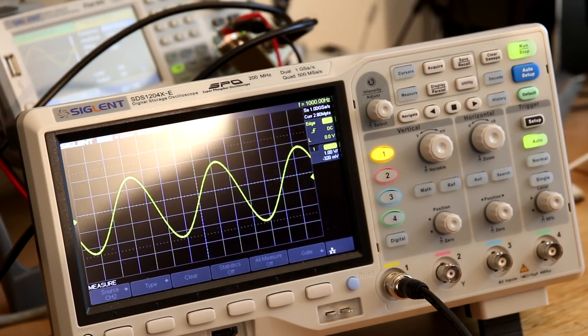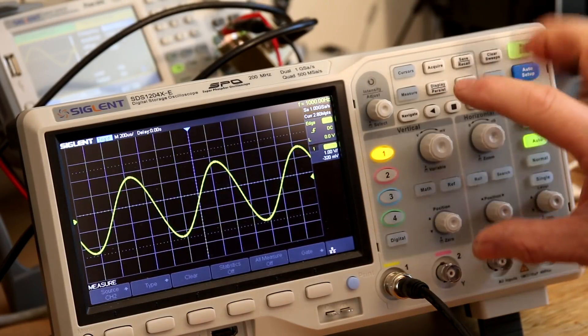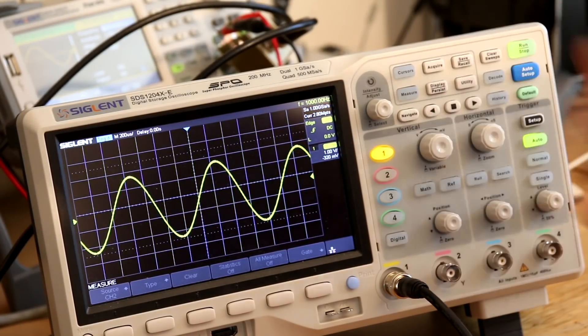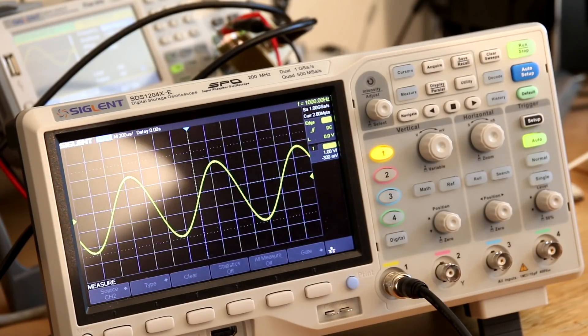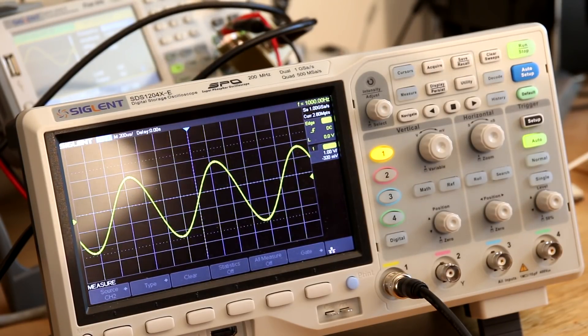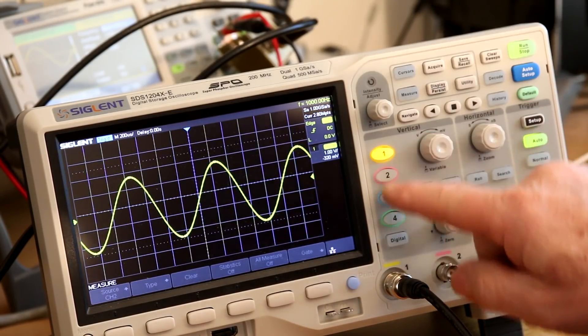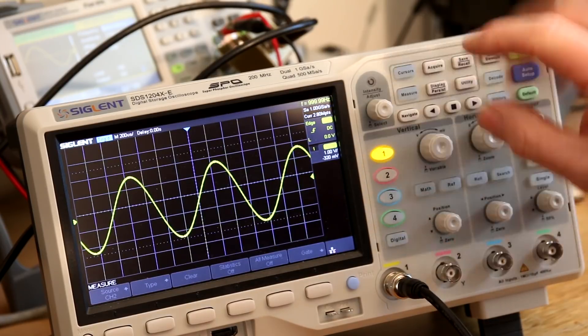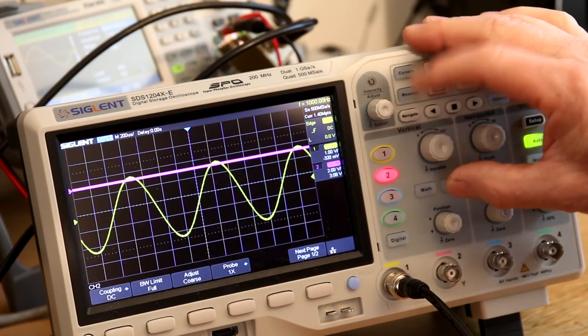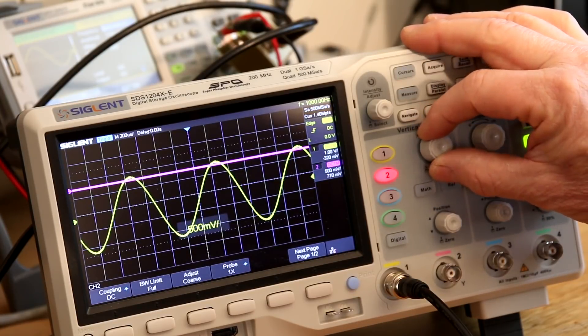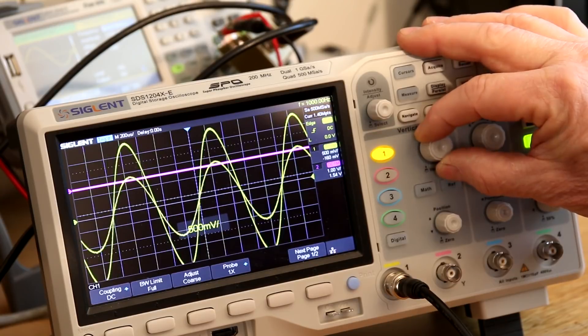Though there are four channels, you can see each of the channel inputs are here, there's only one set of vertical controls. I've seen this on some of these other inexpensive Chinese scopes. The way it works is that there are four buttons here to select which channel these buttons deal with. So I can go to channel 2 and I've turned it on and I can set the gain for channel 2. I can go back to channel 1, set the gain for channel 1.